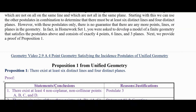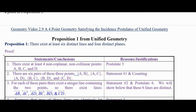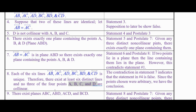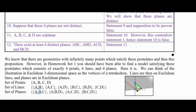So what did we prove? We proved that there exist at least six distinct lines and four distinct planes, and of course we were given at least four distinct points. Even though in Euclidean geometry we get infinitely many points on a line and infinitely many lines in a plane, there actually is a geometry satisfying all the postulates we have so far that consists of only four points, six lines, and four planes. And here it is.